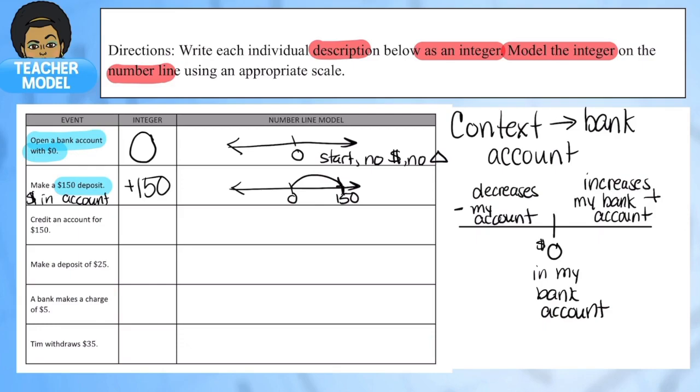And the next one, I have a credit in my account for 150. Now you've got credits probably when you're playing video games, if you have Roblox or some type of video game. When you have credits it's like money in your account that you can spend. We love getting credits in games, so again that's a positive. I'm going to represent that the same way. Here's zero, I'm also going to represent it as positive 150. Credit adds to my account just like a deposit adds to my account.